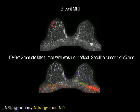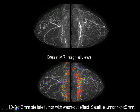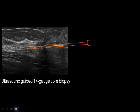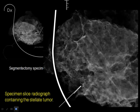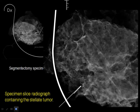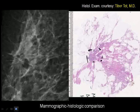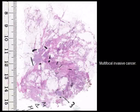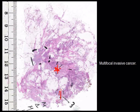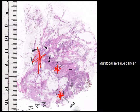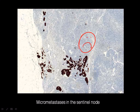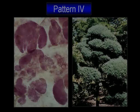Breast MR confirms that it really is multifocal disease — at least 3 foci. Segmentectomy takes place after core biopsy proves invasive carcinoma. We magnify and slice the specimen and correlate with large section histology. Here is the cancer we found — but pathology says there is another one, and another one. So she actually has 3 cancers, just as the automated ultrasound showed. And here is the lymph node metastasis.